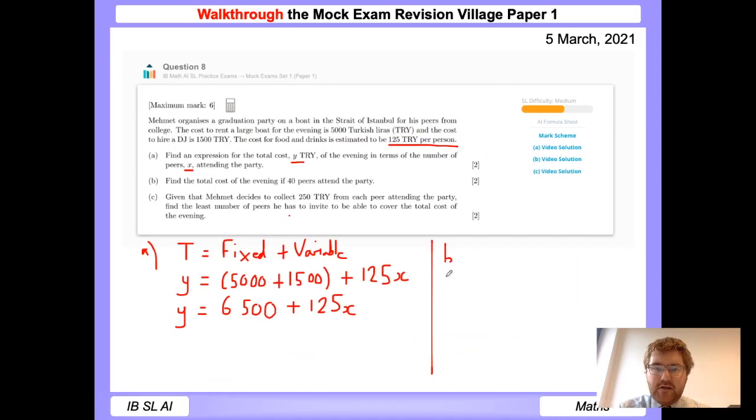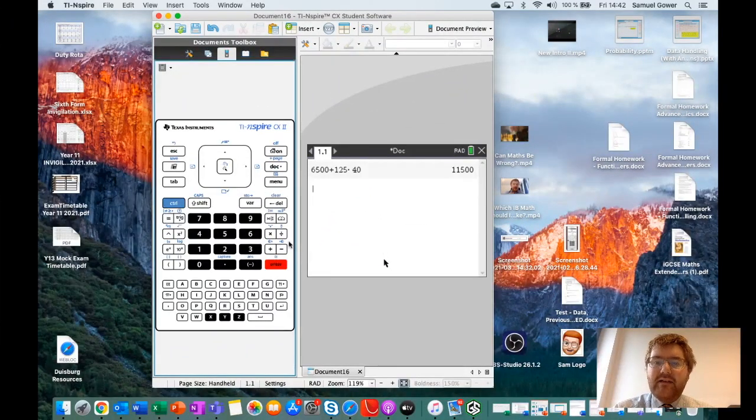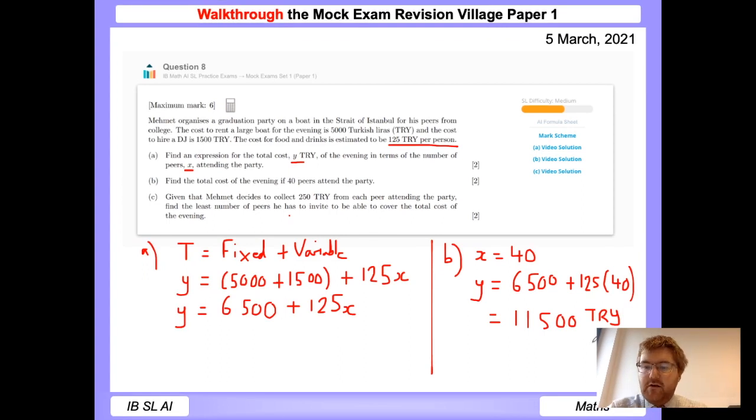Now look at part B. So we want to find the total cost of the evening if 40 peers attend the party. So we've now got x to be 40, because that represents the number of people. So when x is equal to 40, the total cost, which is the function we made before Y, will be equal to 6,500 plus 125 lots of 40. Now we could work this out using mental arithmetic or multiplication method, but this is why we have our GDC. So we're going to put this into our GDC. And if we put this into our GDC, we have then the answer of 11,500 Turkish lira.